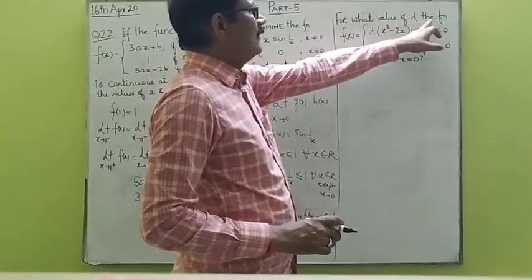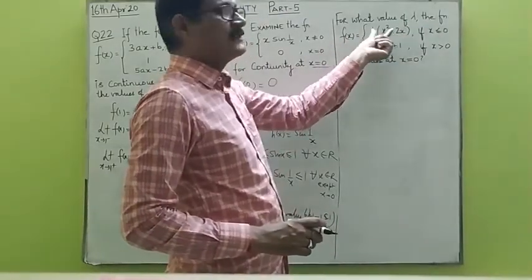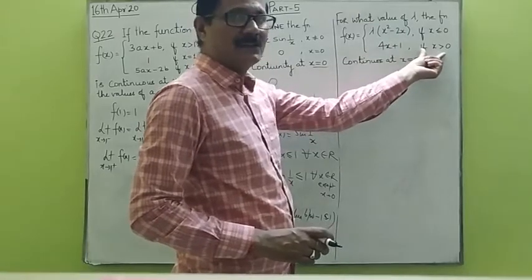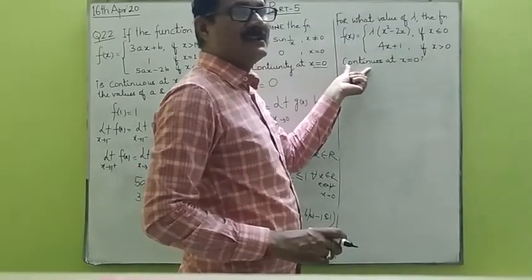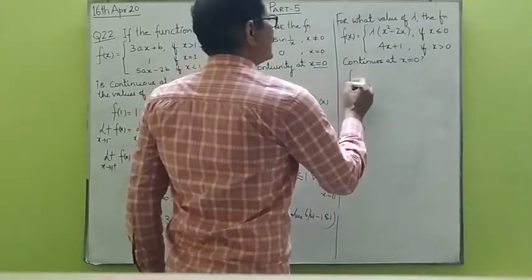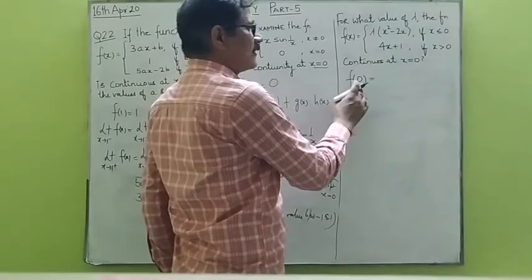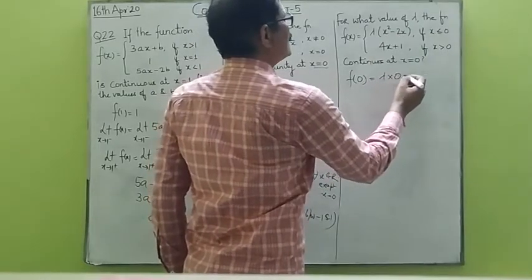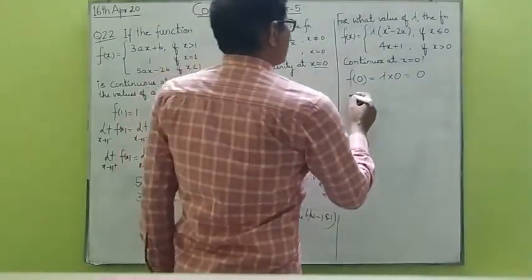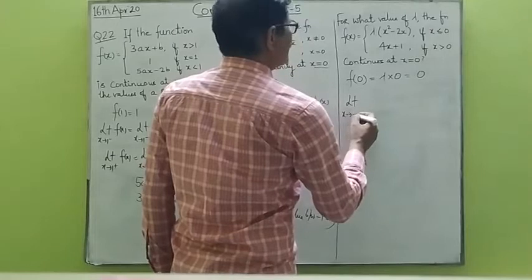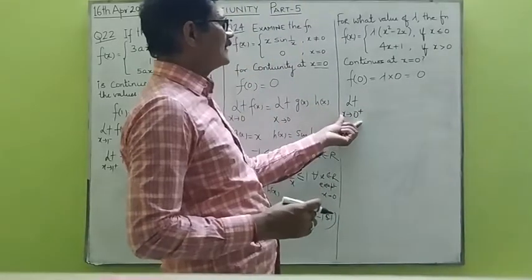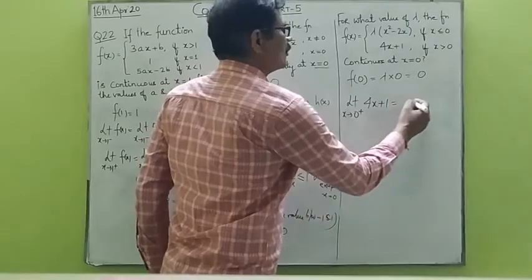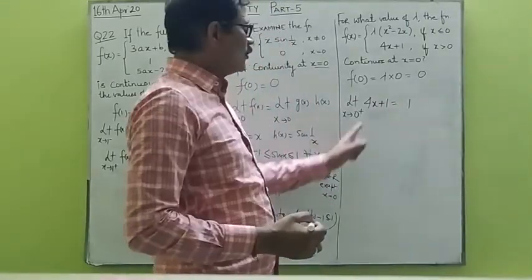Moving on to the next problem: find the value of lambda. The function is defined as lambda times x squared minus 2x for x less than or equal to 0, and as 4x plus 1 if x is greater than 0, and the function is given to be continuous at x equals to 0. The value of the function at 0 is given by the first expression; putting x as 0, we get lambda times 0, which is 0. The right hand limit as x tends to 0 plus uses 4x plus 1, giving 4 times 0 plus 1, which equals 1.